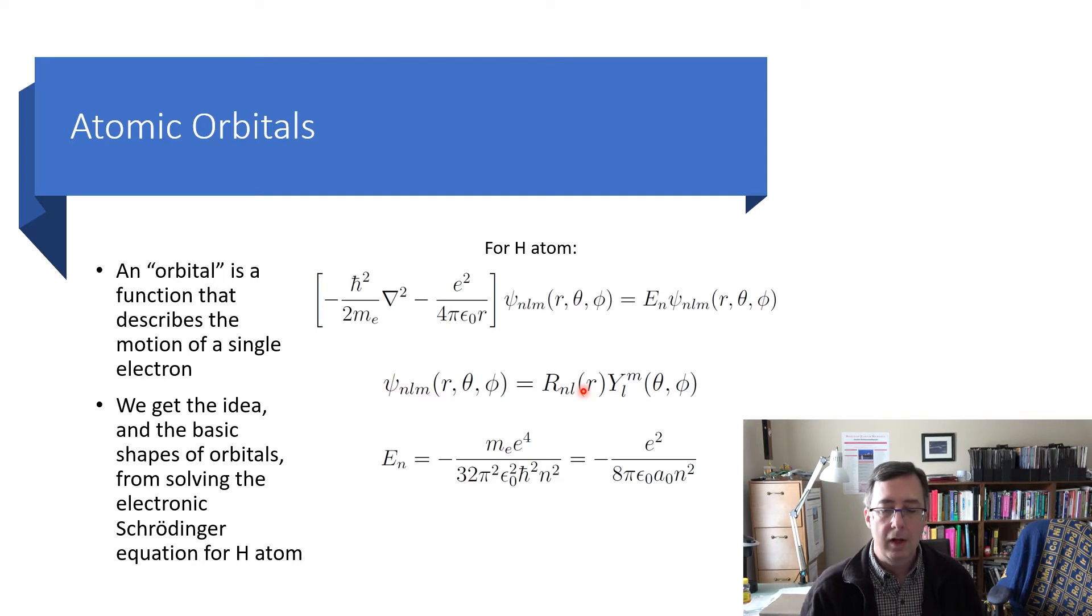And the energies, which depend on this integer n, are this, kind of a combo of different physical constants, the mass of the electron, the charge on the electron, and et cetera, h-bar. You notice it's proportional to one over n squared, so as n gets bigger and bigger, then the energy has a bigger and bigger denominator and approaches zero.